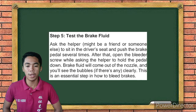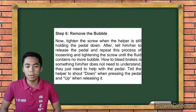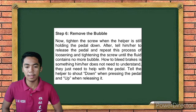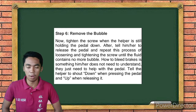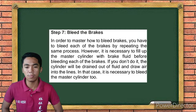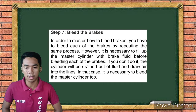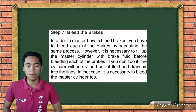Step four is connect and fill. Fit one end of a hose into the end of the bleeder screw and put the other end in a glass jar or bottle. Fill the jar with brake fluid at a level so that the hose's end is submerged. If you can't find a flexible hose, keep the jar near the nozzle so it can catch the liquid squirting out. Step five is to test the brake fluid. Ask a helper to sit in the driver's seat and push the brake pedal several times. Then open the bleeder screw while asking the helper to hold the pedal down. Brake fluid will come out and you'll see bubbles in the system.